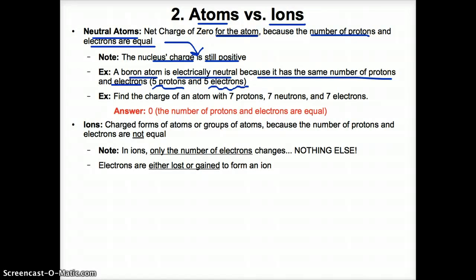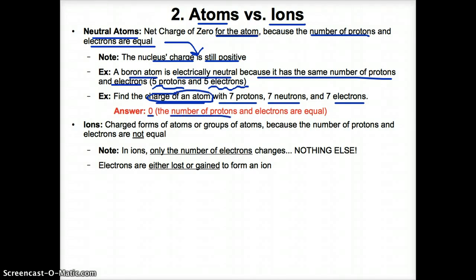Consider an atom with seven protons, seven neutrons, and seven electrons. Since we're asked to find the charge of the whole atom and not the nucleus, the charge of an atom is zero overall because the number of protons and electrons are equal. The positive charges from the protons and the negative charges from the electrons cancel each other out when they are equal in number.